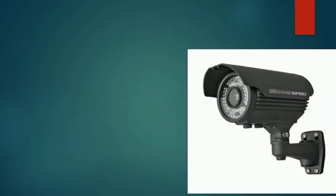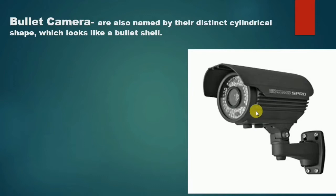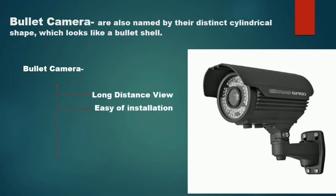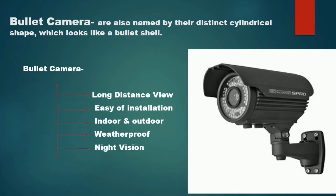The next camera we're going to talk about is the bullet camera. It looks like a bullet — it has a distinct cylindrical shape which looks like a bullet shell, which is why it's called a bullet camera. One of the major features of this camera is that it has a long-distance view. It's very easy to install, used for both indoor and outdoor installations, and is also weatherproof. It also has night vision.